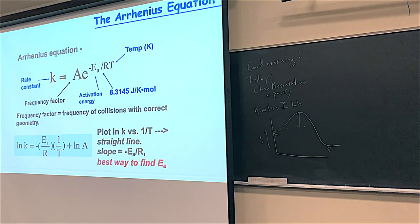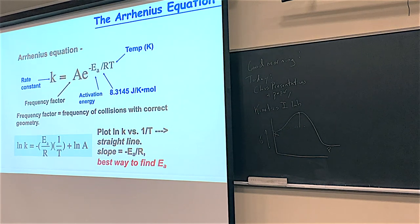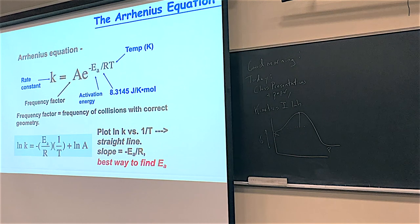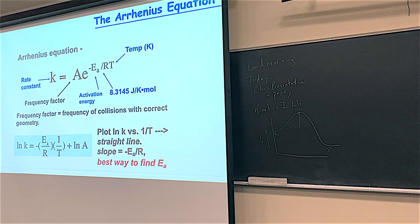In the Kinetics Part 2 lab, that's what we'll be after — the E sub A value. You can also find the frequency factor, which I'll just mention in passing. If you have rate constants at different temperatures, you can plot ln(K) on the y-axis and 1 over Kelvin temperature on the x-axis. You should get a straight line with a negative slope, where slope equals −E_A over R. That tells you if you just have to jump over a remote control or a desk.